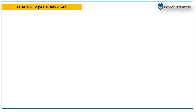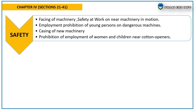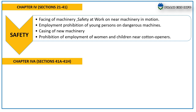Chapter 4, Safety, covers sections 21 to 41. The main safety measures include: fencing of machinery, safety at work on or near machinery in motion, prohibition of employment of young persons on dangerous machines, casing of new machinery, and prohibition of employment of women and children near cotton openers.